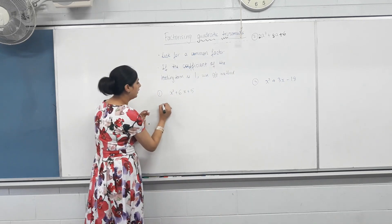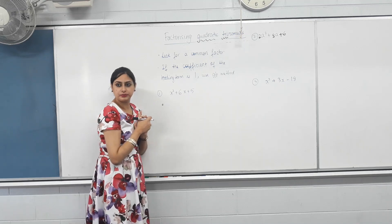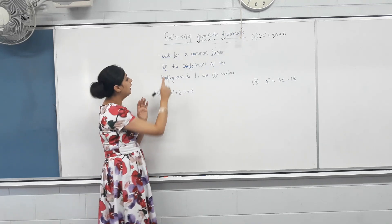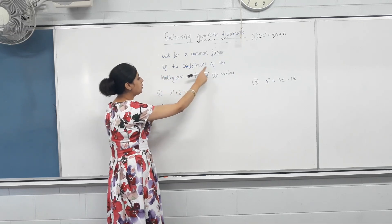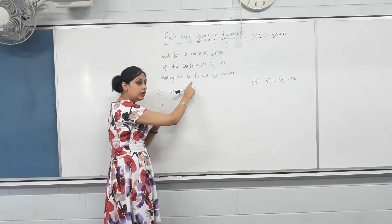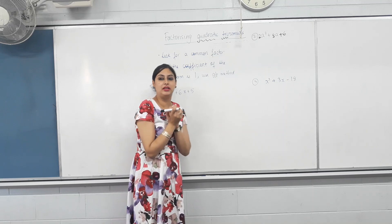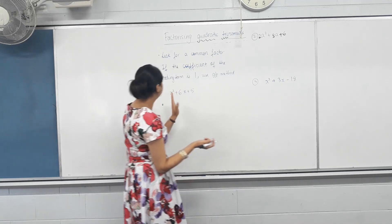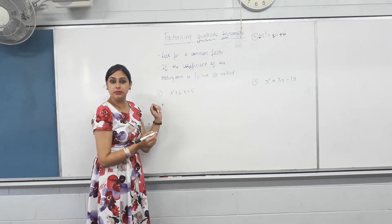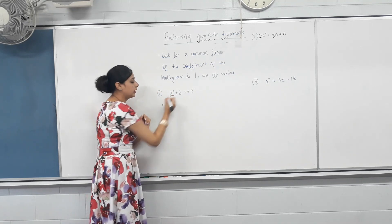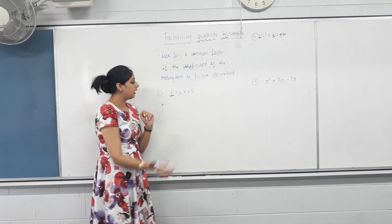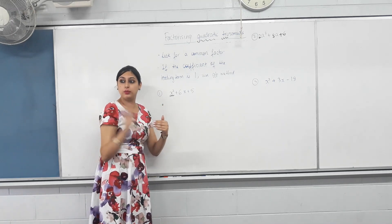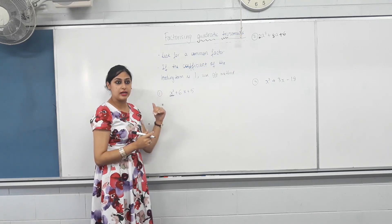Let's do that. Is there any common factor? No. So that's it, we move on to the next step. If the coefficient of the leading term is one, we use a method called the AB method. I call it AB method. What's the leading term? The term with the highest power. Is the leading term x-squared? Yes. Is the coefficient of x-squared one? Yes. If that is the case, we move on to the next step: AB method.